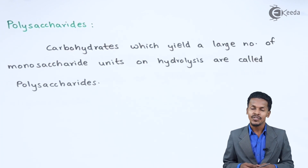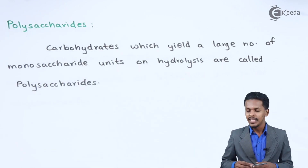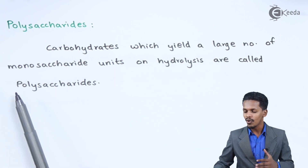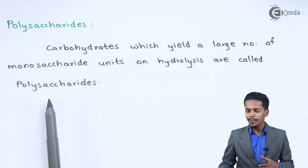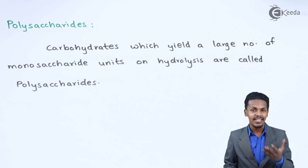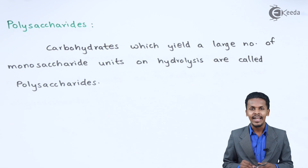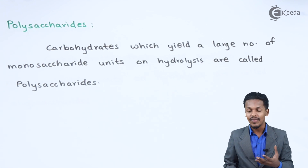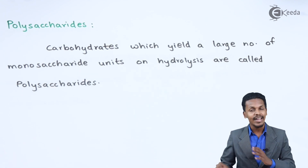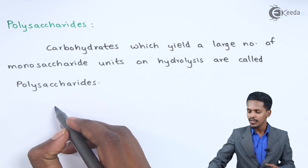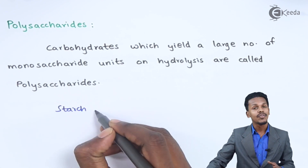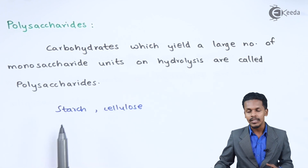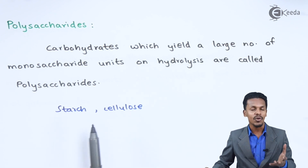Now let us discuss Polysaccharides. Carbohydrates which yield a large number of Monosaccharide units on hydrolysis are called Polysaccharides. Such Carbohydrates are tasteless and amorphous in nature. More than 100 to 3000 Monosaccharides can be produced when these Carbohydrates undergo hydrolysis. Examples include starch and cellulose, which on hydrolysis give a large number of Monosaccharides.